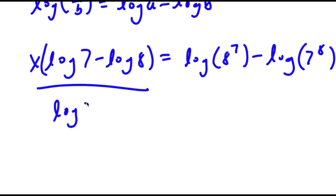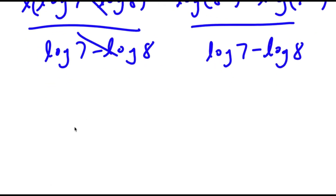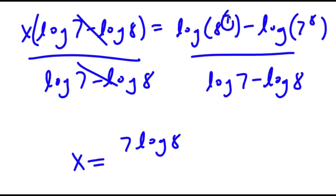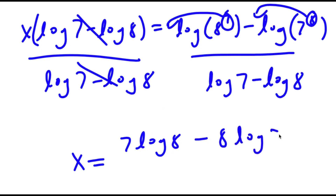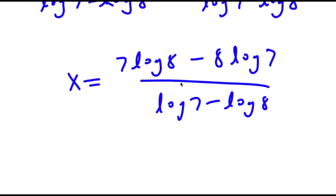Now if I divide both sides by log 7 minus log 8, these cancel. Moving the exponents to the front, I have x equals 7 times log 8 minus 8 times log 7 over log 7 minus log 8. Plugging in the values of log 8 and log 7, you get x equals negative 0.4399.